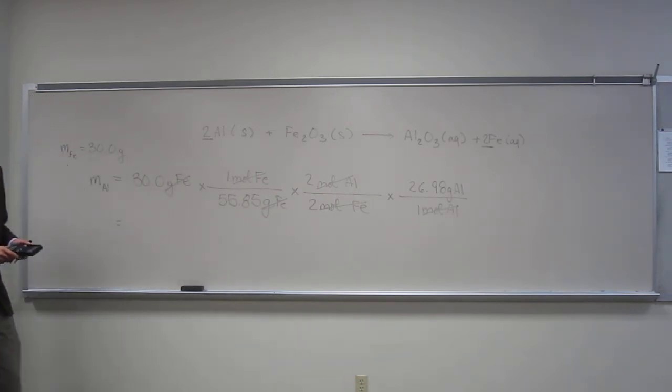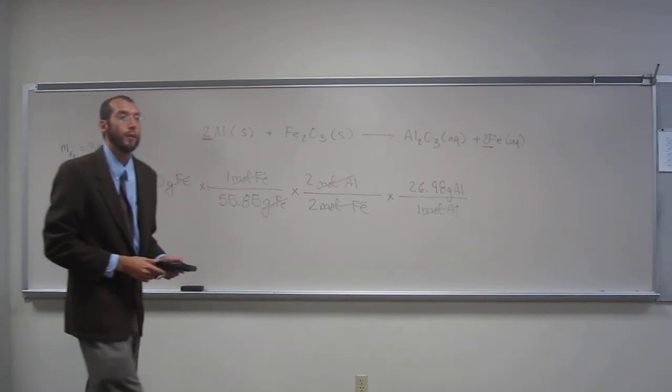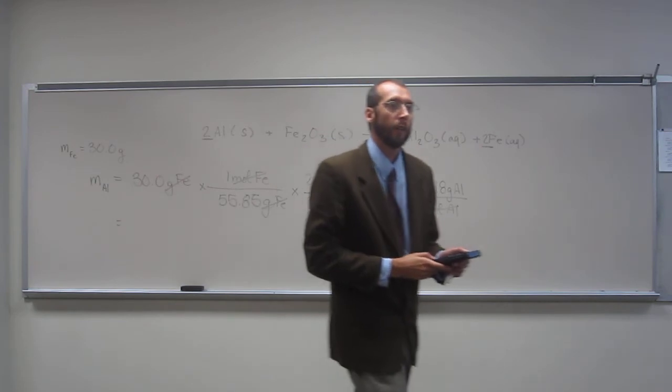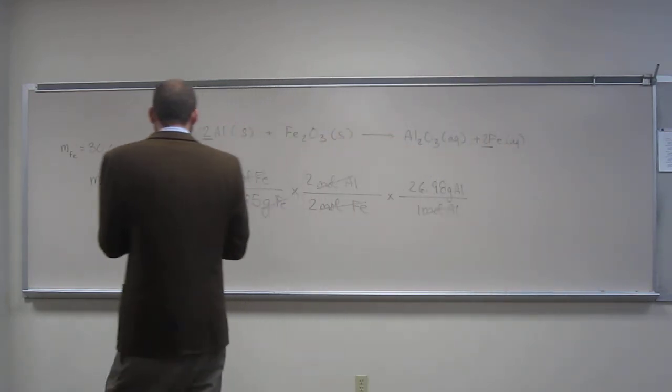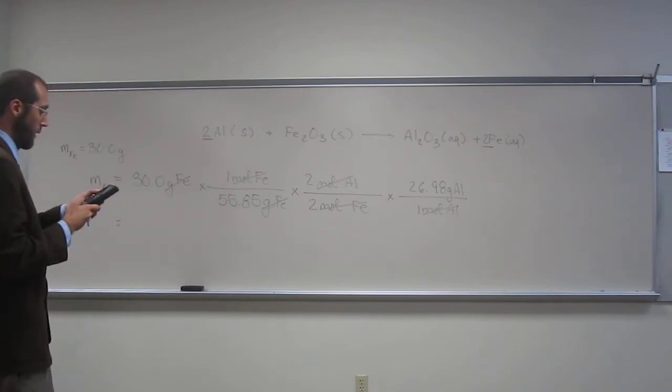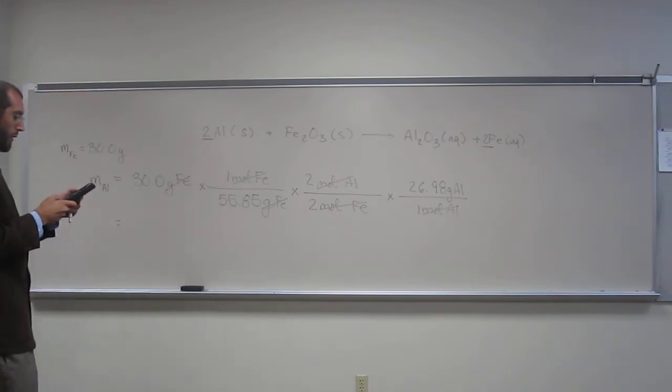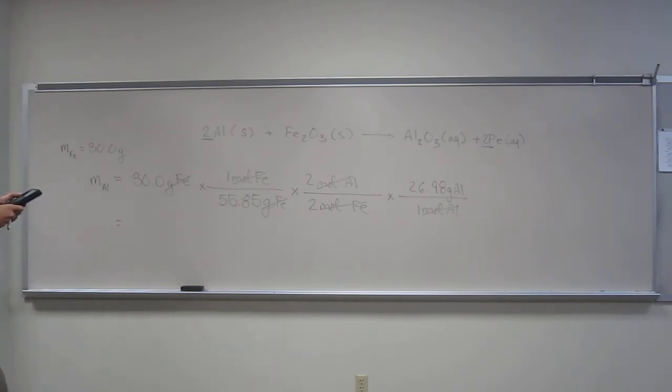Just remember, this is what chemistry is all about. Once you learn the periodic table, and once you learn canceling units, you should be able to do anything in chemistry. Okay, so let's do it together. Thirty times two times twenty-six point nine eight. Okay, that number divided by fifty-five point eight five. That number divided by two.